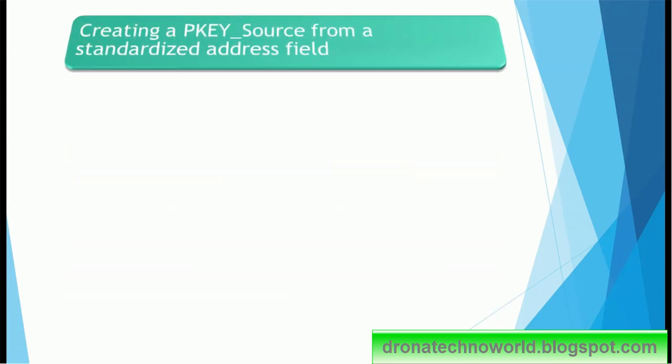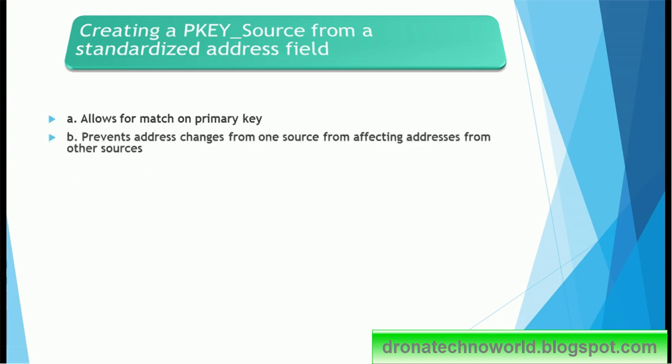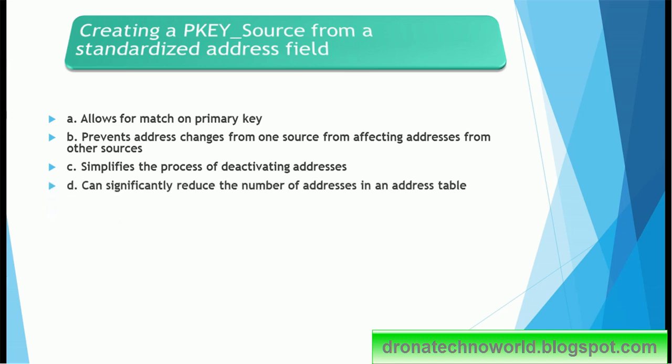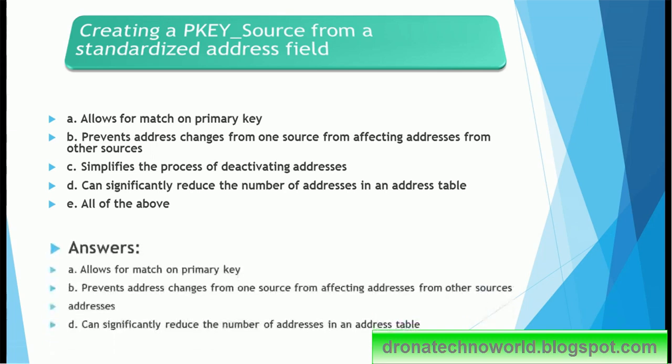Let's have a look at the next question. Creating a PK, that is primary key source, from a standard address field: allows for match on primary key, it prevents address changes from one source from affecting addresses from other sources, it simplifies the process of deactivating addresses, can significantly reduce the number of addresses in the address table, all of the above. This is very interesting. I think most of the projects for which the sources are not maintaining the unique column for addresses, the PK source is generated based on the address fields such as address line one, address line two, city, state, postal code, etc. So combination of those will be used to prepare the PK.